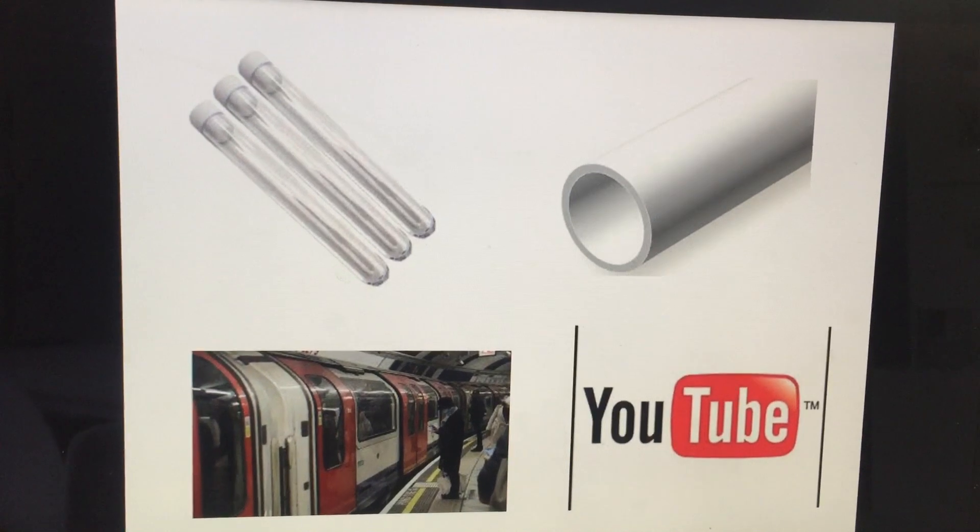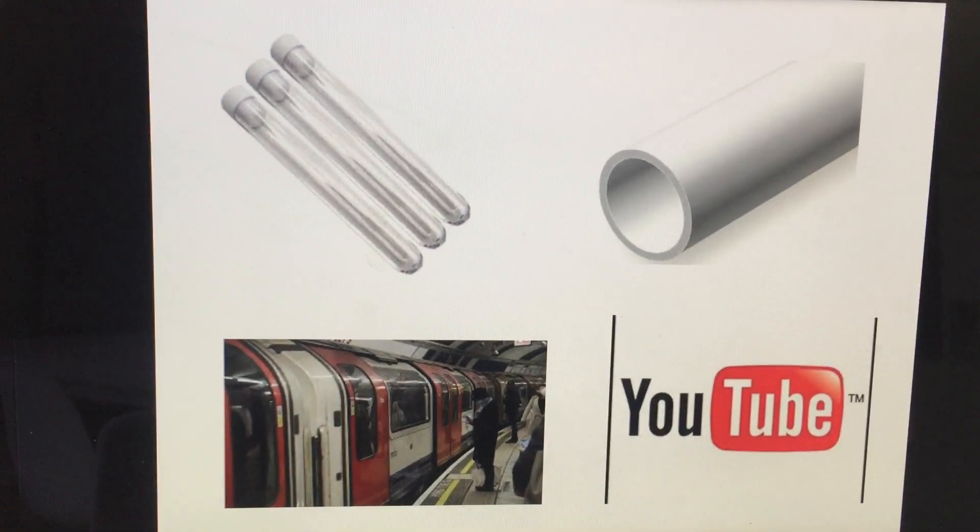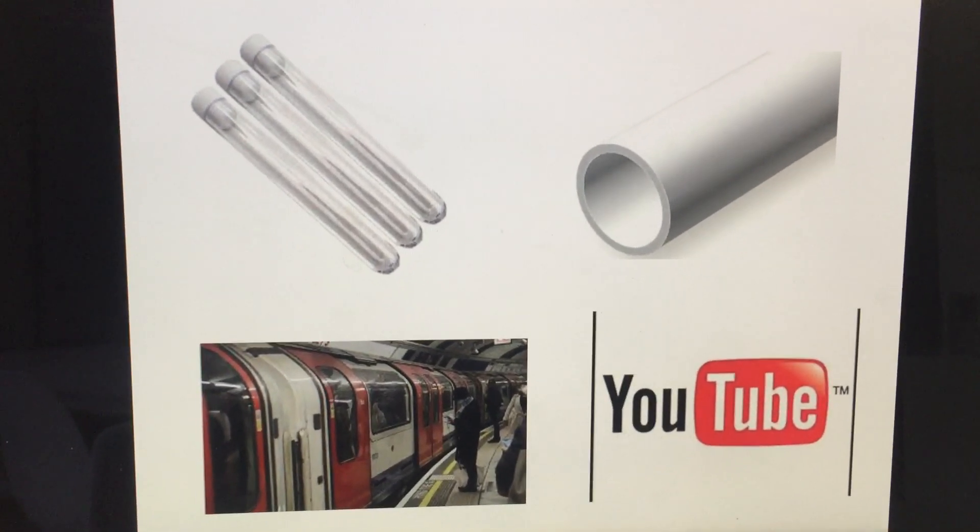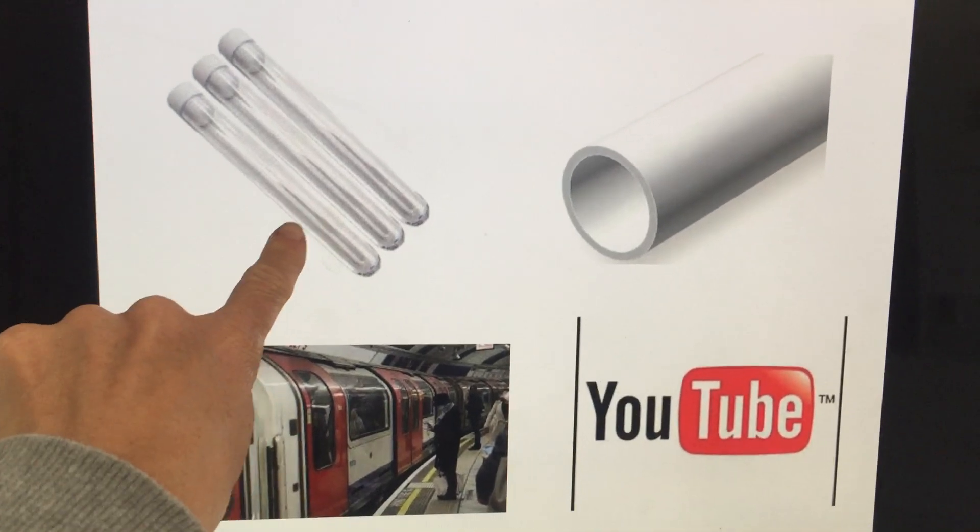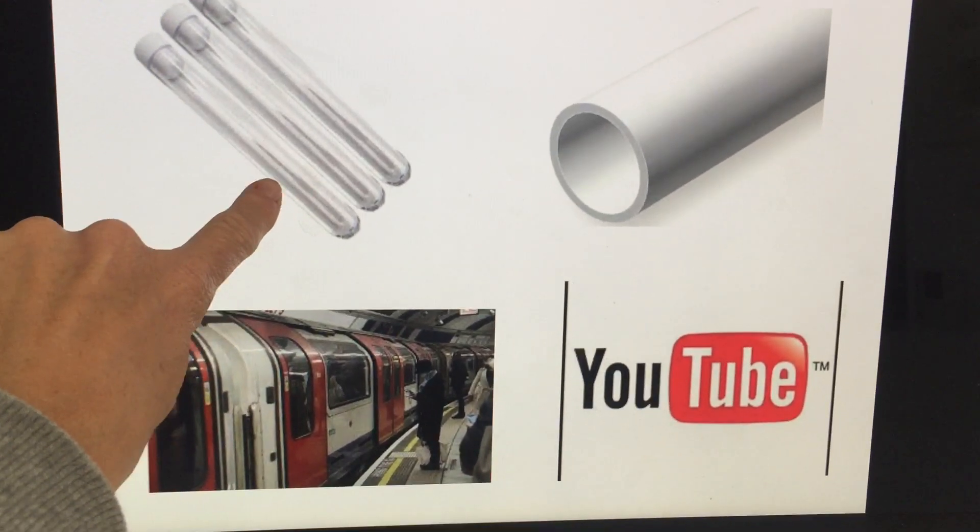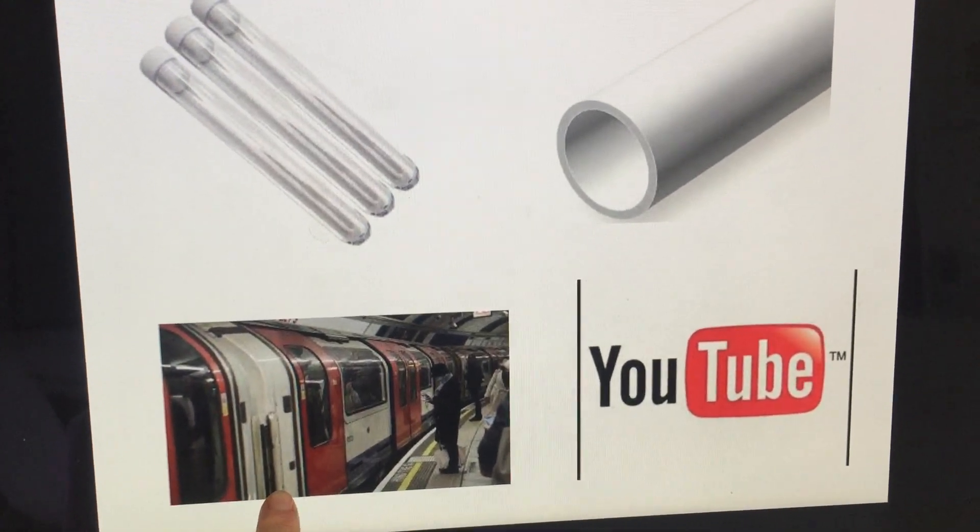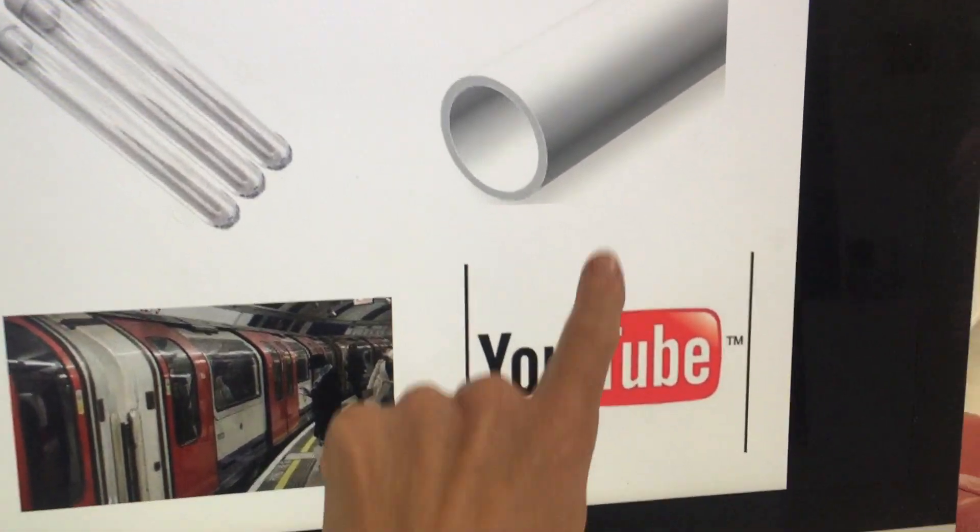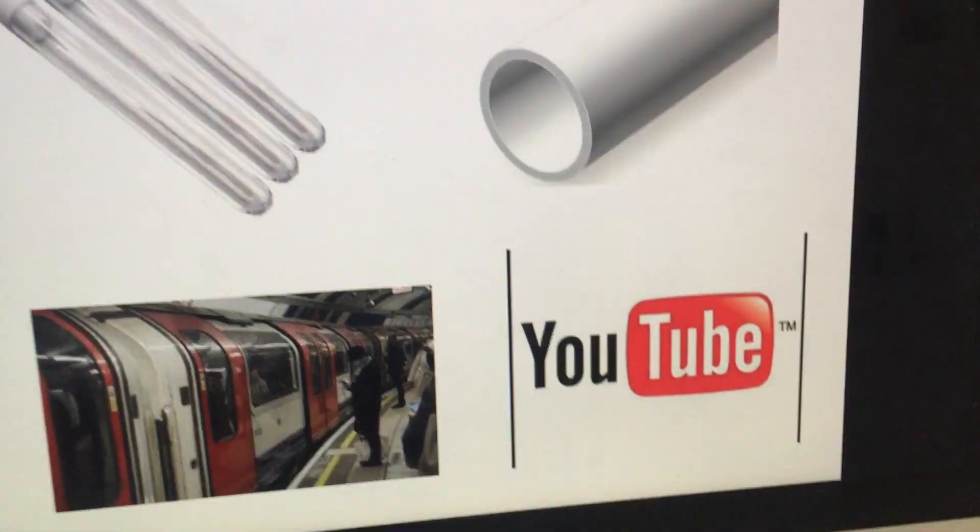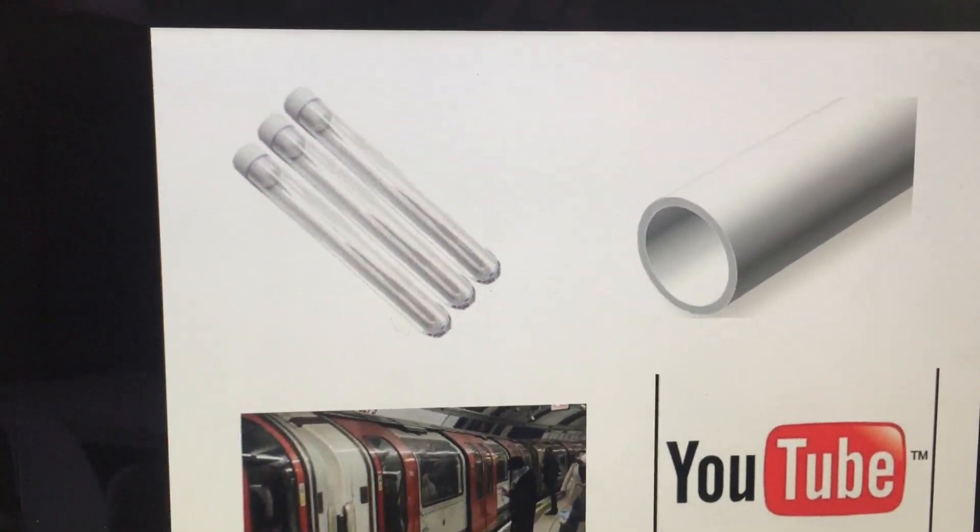Next picture. A tube. So when Mrs Goss was researching tube photos, I found some test tubes that you'll use in science, I found the underground in London, which is also called the tube, YouTube, and a tube like a 3D shape, a tube.